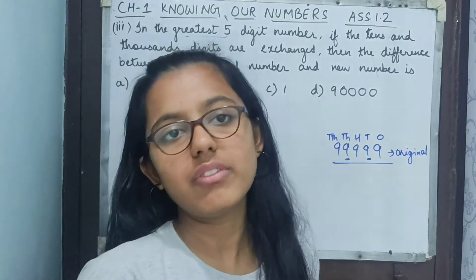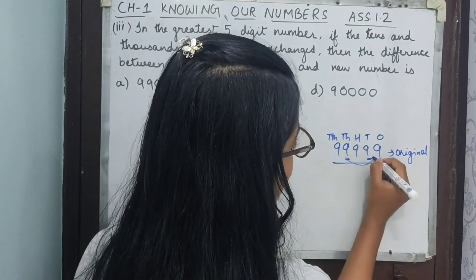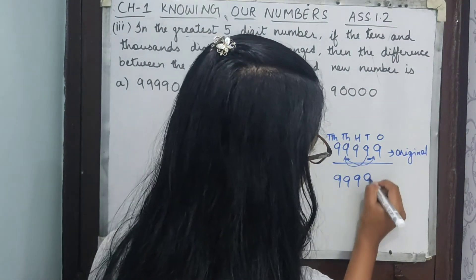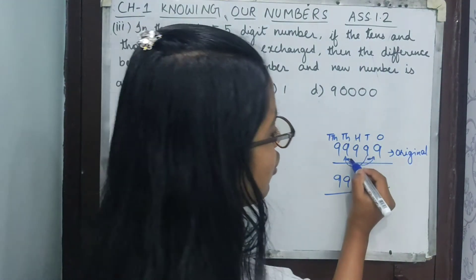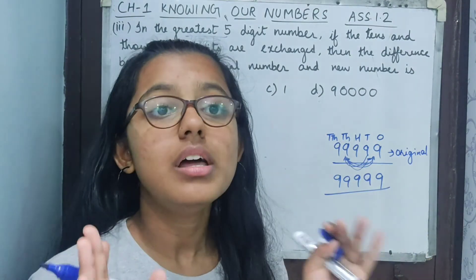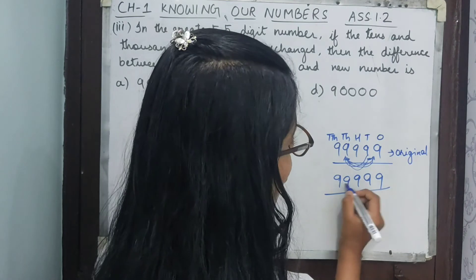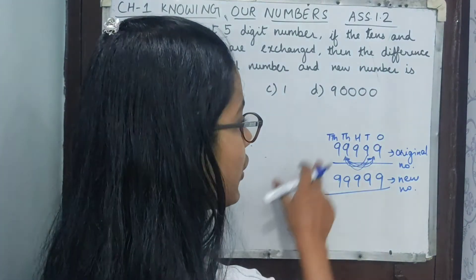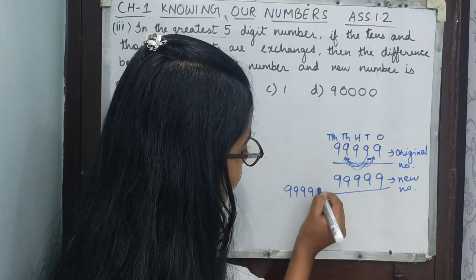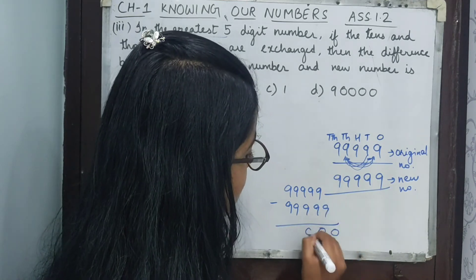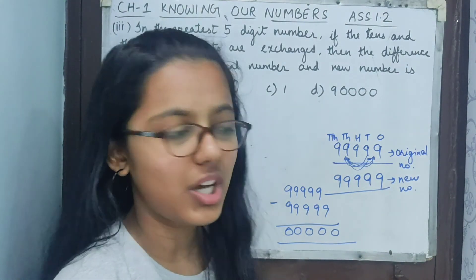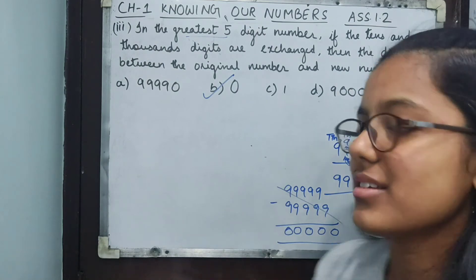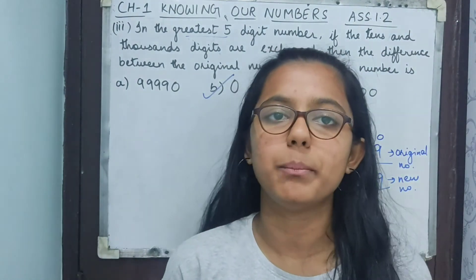Since both the tens digit and the thousands digit are 9 — the same — exchanging them makes no difference. The new number is still 99999. So original minus new is 99999 minus 99999, which equals zero. All nines subtract to give zero. The answer is zero.